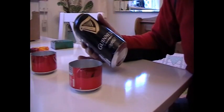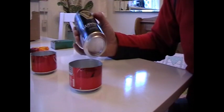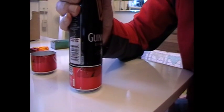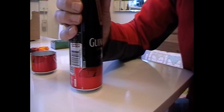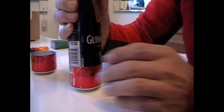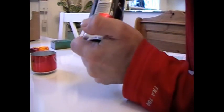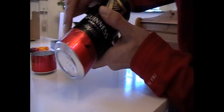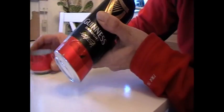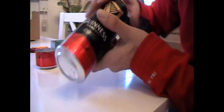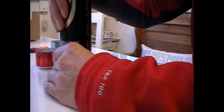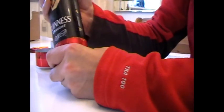Get another can, preferably a full one, in this case is a can of Guinness, and then press that inside the base like that and press it as hard as you can. What that will do is it will stretch this here in order to receive this. All you do is press it down like that just for a bit.